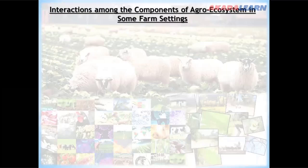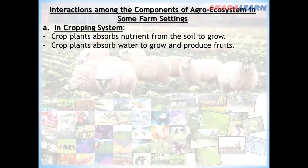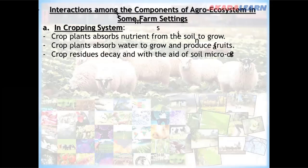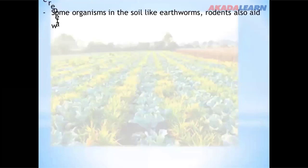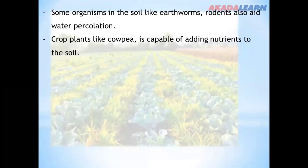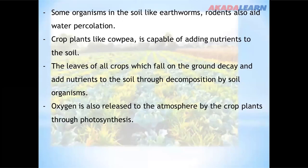In a cropping system, crop plants absorb nutrients and water from the soil to grow and produce fruits. Crop residues decay and, with the aid of soil microorganisms, release nutrients back to the soil. Some soil organisms like earthworms and rodents also aid water percolation. Certain crop plants like legumes are capable of adding nutrients to the soil. Leaves that fall on the ground decay and add nutrients through decomposition by soil organisms. Oxygen is also released to the atmosphere by crop plants through photosynthesis.